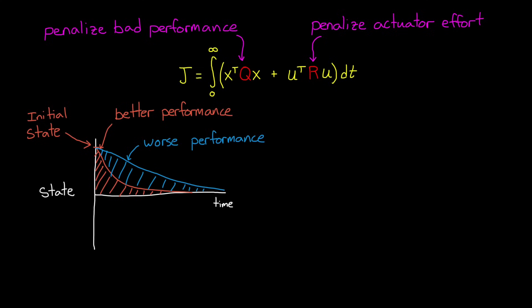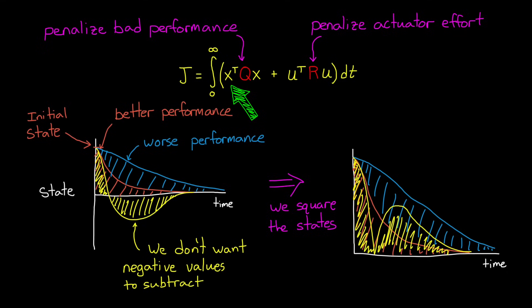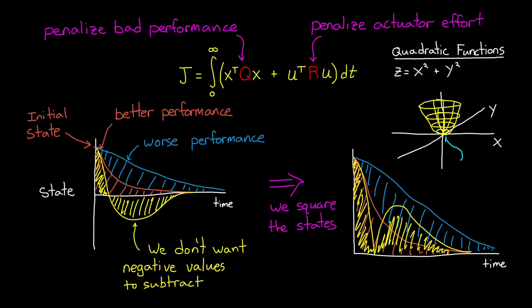However, states can be negative or positive, and we don't want negative values subtracting from the overall cost. So we square the value to ensure that it's positive. This has the effect of punishing larger errors disproportionately more than smaller ones, but it's a good compromise because it turns our cost function into a quadratic function. Quadratic functions like z equals x squared plus y squared are convex, and therefore have a definite minimum value. And quadratic functions that are subject to linear dynamics remain quadratic, so our system will also have a definite minimum value.